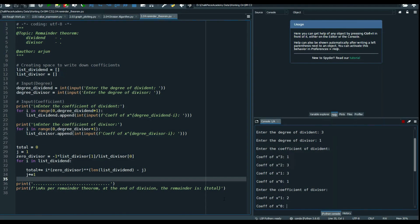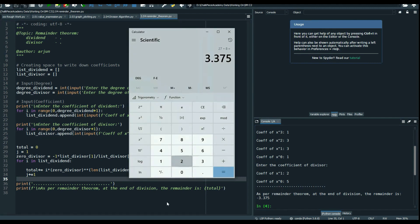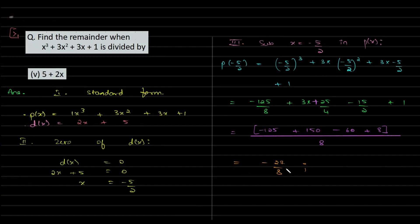The answer is -3.375. If I divide 27 by 8, I get 3.375, and with the negative sign, that confirms our answer is -27/8.